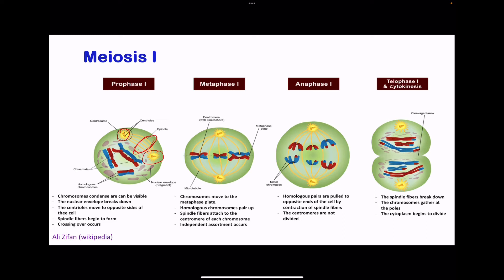In metaphase I, the chromosomes move to the metaphase plate. The homologous pairs are aligned together — if one is from the father, the other is from the mother, forming homologous pairs. Spindle fibers attach to the centromere of each chromosome, with different fibers so that during anaphase they can pull away separately. During metaphase I, independent assortment occurs, meaning the chromosomes compete for the metaphase plate, and various combinations can occur during this arrangement.